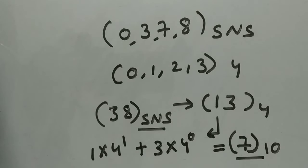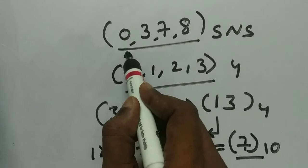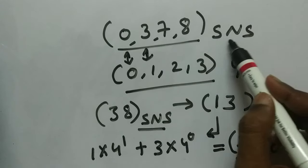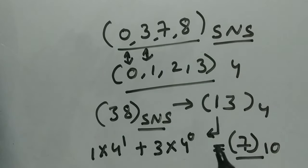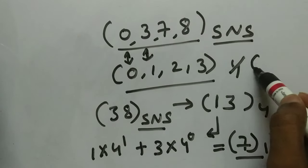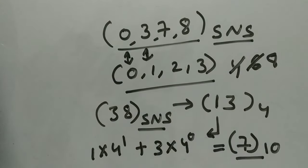I hope you are getting this — how to convert from base 10 to SNS and from SNS to base 10. All we need to know is: if you don't know the base, take the SNS values and compare with the known values. If the SNS number system has more than 4 values — say 6 values — then use base 6 instead of base 4. If it has 8 values, use base 8.